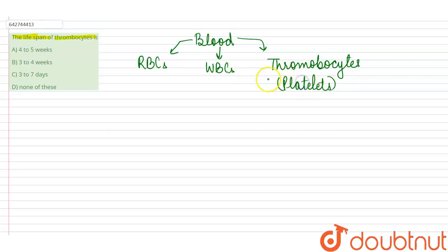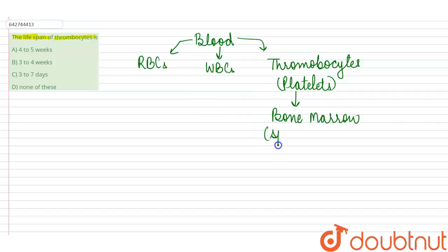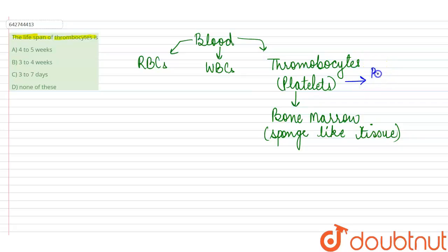Thrombocytes, or platelets, are formed in the bone marrow — a sponge-like tissue inside our bones. These thrombocytes are primarily involved in the clotting of blood in the case of a wound.